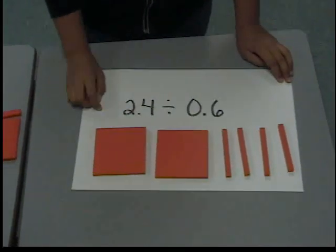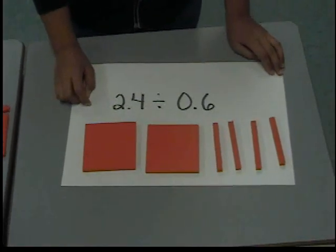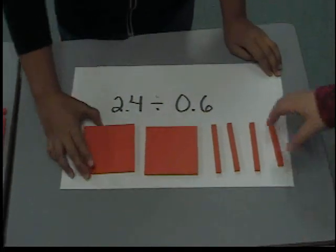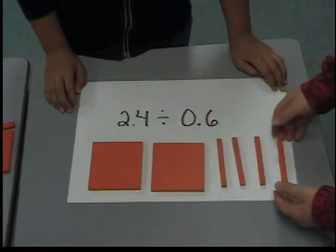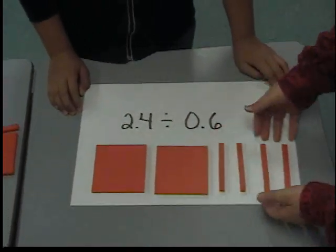Today we're going to be dividing 2.4 by 0.6. You will first lay out your base 10 blocks so you have 2 flats and 4 tenths.